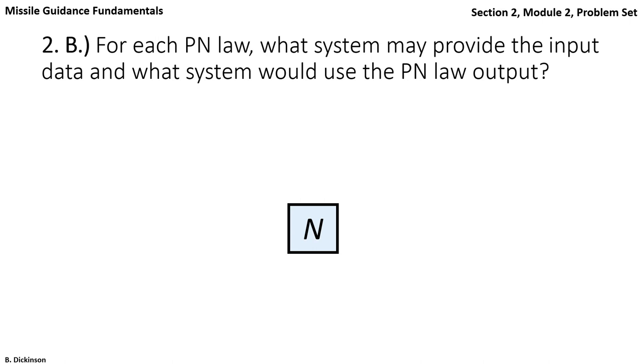So for part B, it's very open ended. It asks you to think about the systems that would exist before and after the guidance law. For the gamma form of pronav, the only input is line of sight rate.